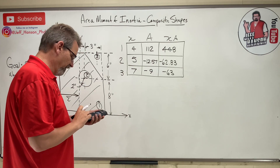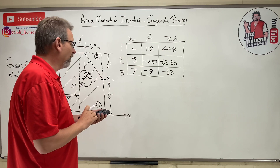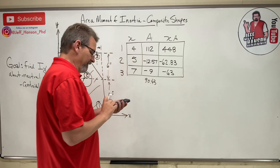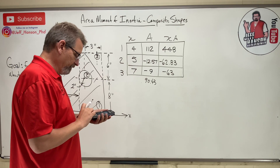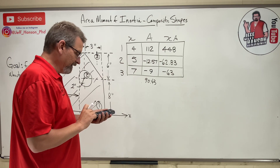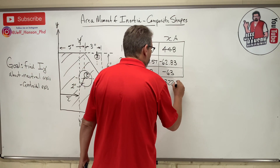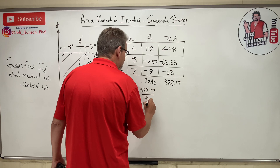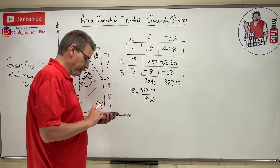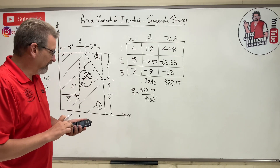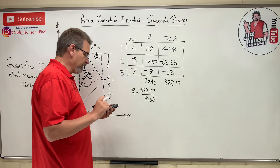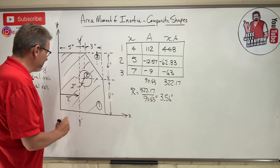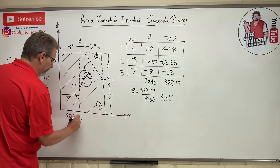So the sum of the areas is 112 − 12.57 − 9 = 90.43, and the sum of x*A is 448 − 62.83 − 63 = 322.17. Therefore, x-bar = 322.17 ÷ 90.43 = 3.56 inches. So this distance from the y-axis is 3.56 inches.